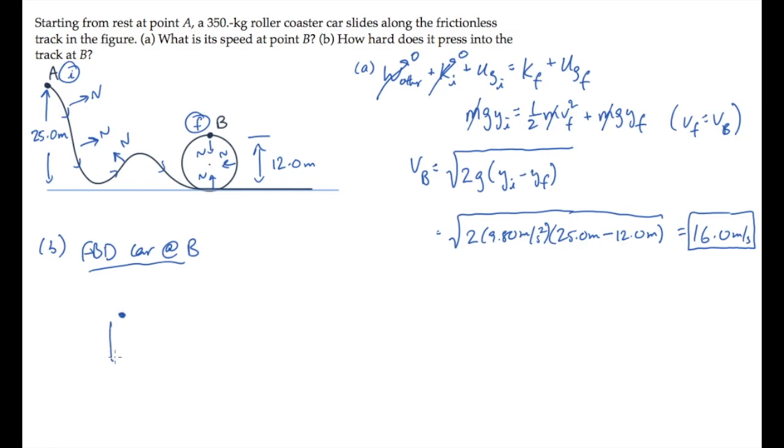Two forces act on the car at point B. Its weight is straight down, and the normal force is also straight down. So if we sum forces in the vertical or Y direction, setting it equal to mass times acceleration in that direction, we have minus n minus mg for the forces.